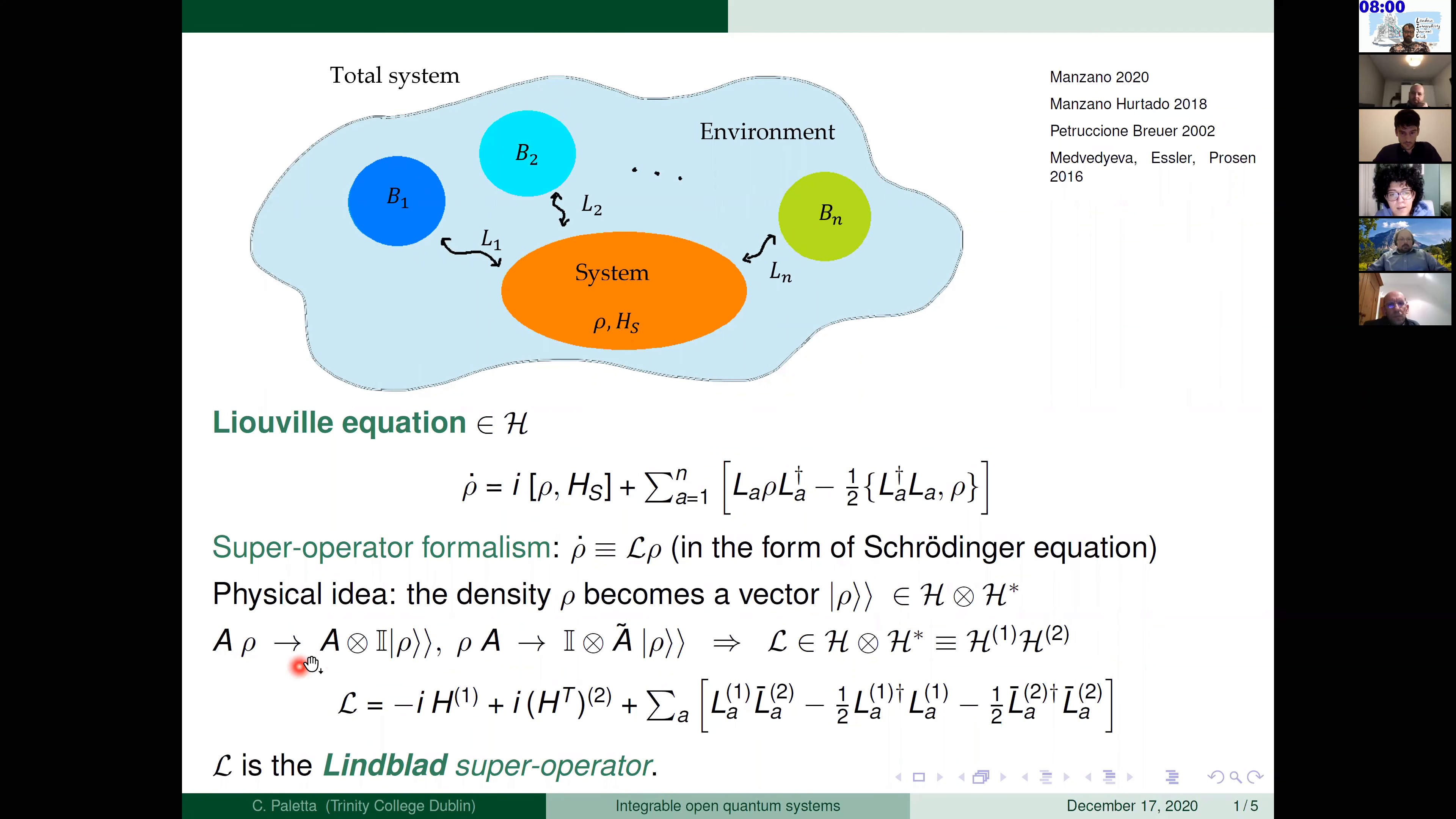So in this equation every time we have the product between an operator that acts on the left of the density matrix it will act non-trivially just on the first space. And every time the product is on the right it will act trivially on the first one and non-trivially on the second one. So finally our super operator will act on this new Hilbert space that we can identify as H₁ and H₂. And here I just wrote which is the form of the super operator and as I say the one and two identify in which space operators act and the bar is just the complex conjugation. This is called the Lindblad super operator.